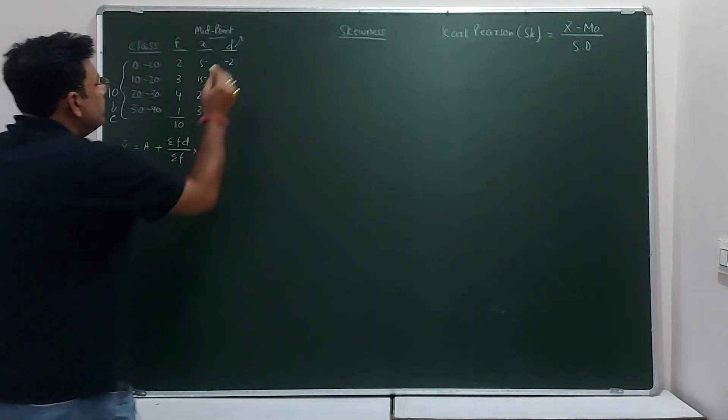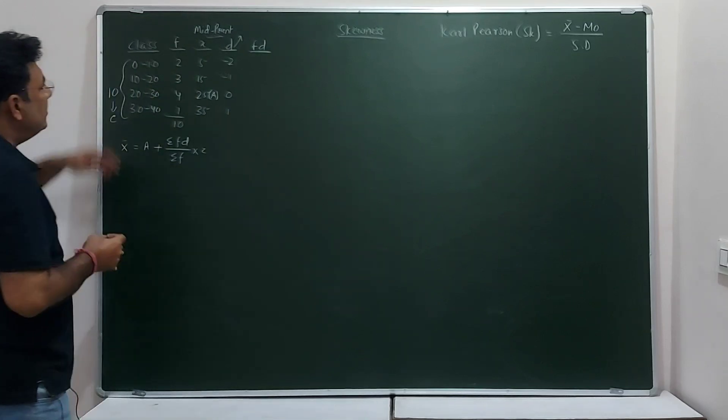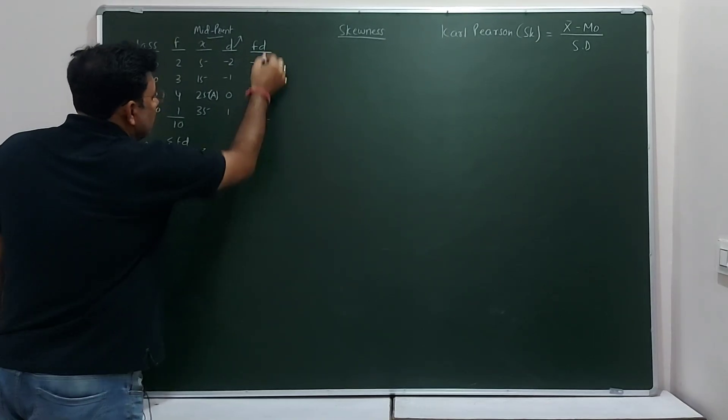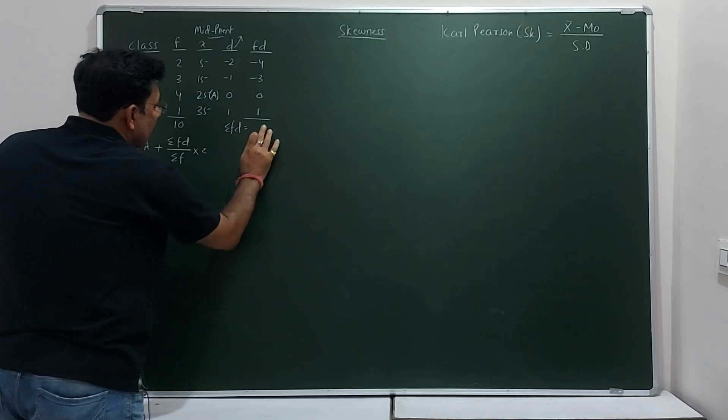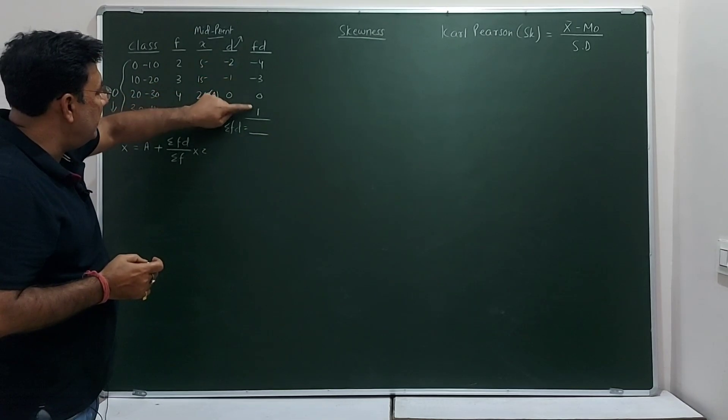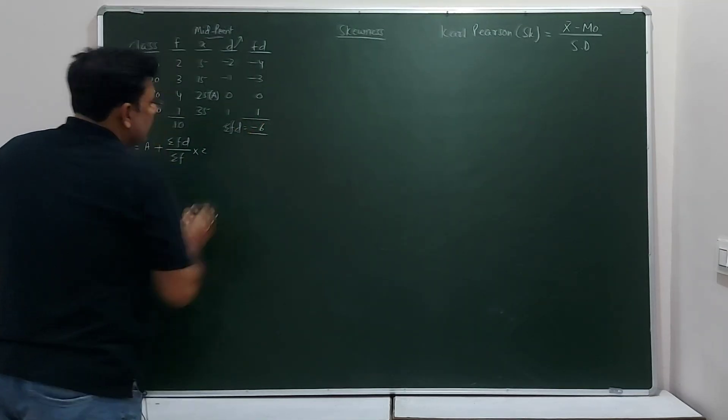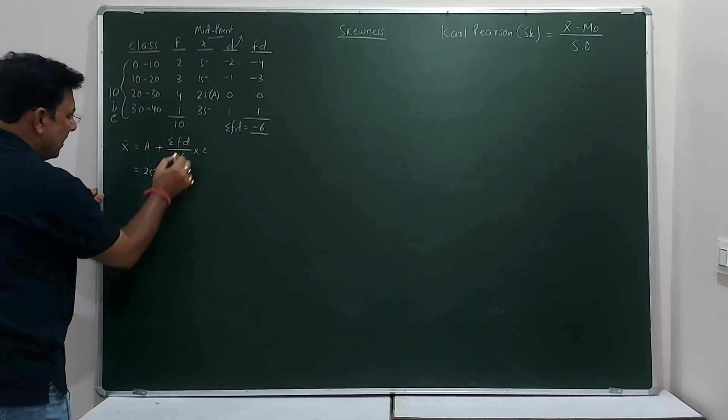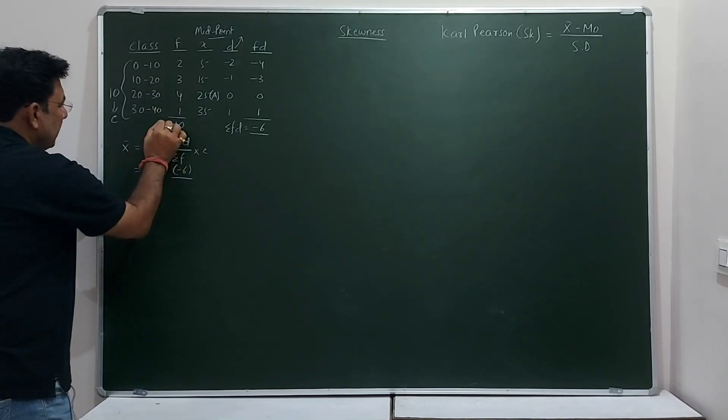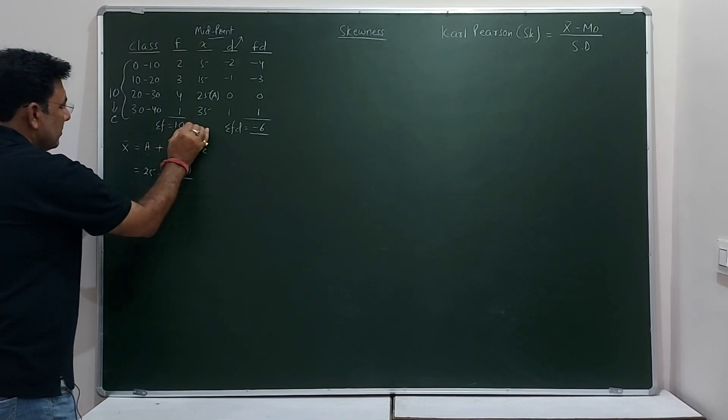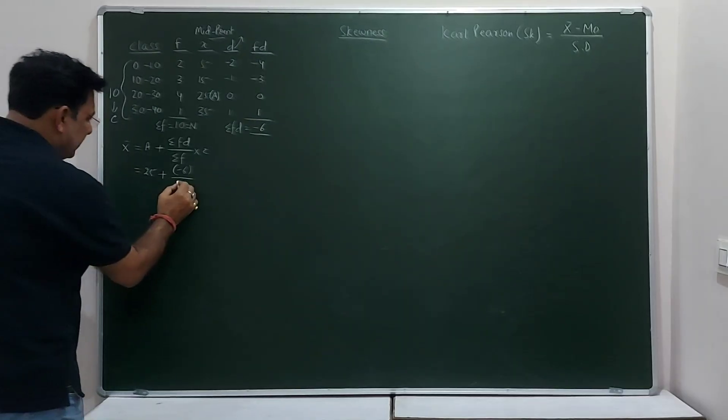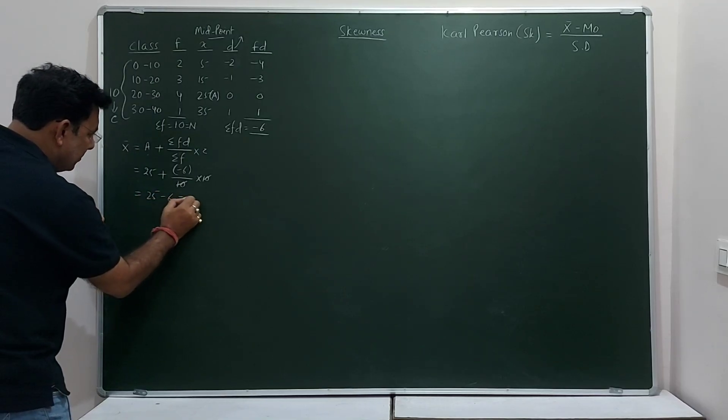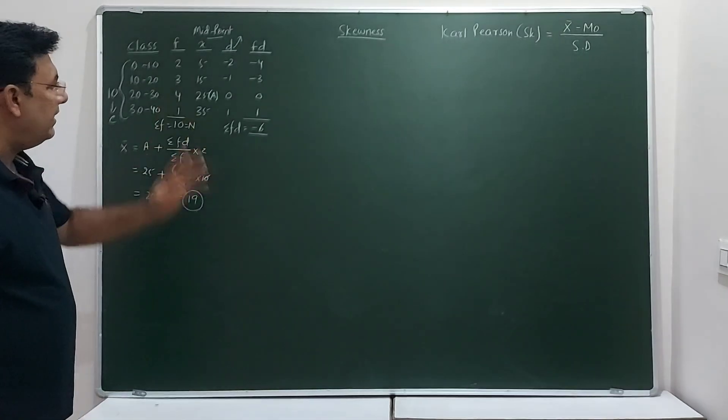Now, we have to find F into D. So find out here, FD, that means you will multiply F with D. So, 2 into -2, you get -4, -3, here 0 and 1. And when you will find the sum of this, you get ΣFD and be very particular, -4, -3, -7, plus 1, so you get -6. Now, we can find the value of mean here. A, A for assumed mean, we have taken 25. ΣFD is -6. ΣF, this is the ΣF, the total. This is also known as N. N and ΣF, both are same. So, this is 10 and class size C, it is 10. So, 10, 10 reduced. So you get 25 minus 6, so that equal to 19. So this is the value of mean.